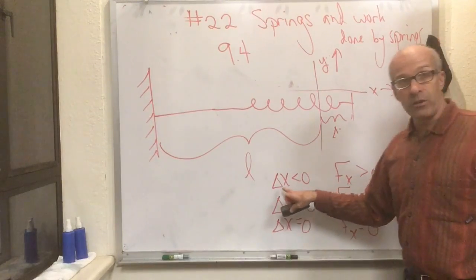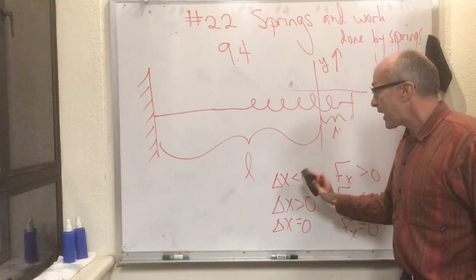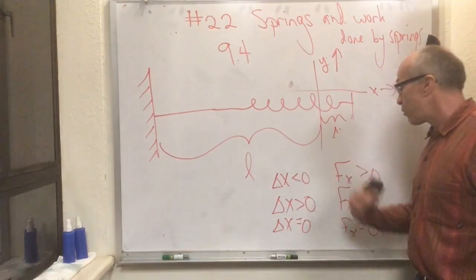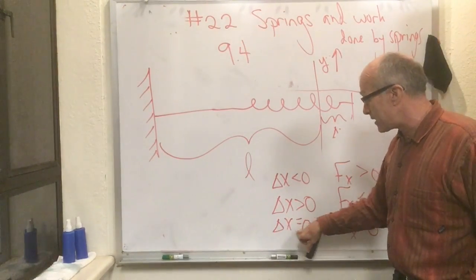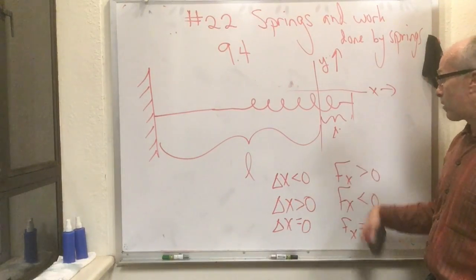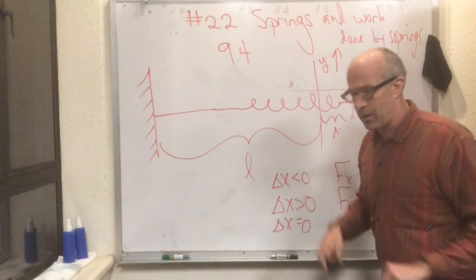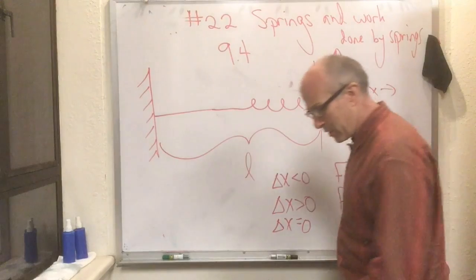This is why this is called a restoring force: when x is less than zero the spring pushes right, when x is zero the spring doesn't do anything, and when x is greater than zero the spring pulls back left. In other words, it's trying to restore itself to its natural position.